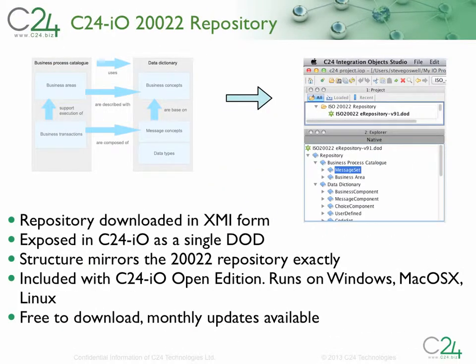Now, what about the model? The repository is publicly available as noted earlier. It is downloadable on the 20022 website as a giant 30MB-plus XMI file. In order to facilitate usage and adoption of 20022, we have built an import facility that automatically converts the published repository into a C24 DoD. This DoD is available as a free-to-download plugin for C24IO Studio, allowing any user of C24 to work directly with the complete current catalog of ISO 20022 business and message model artifacts.